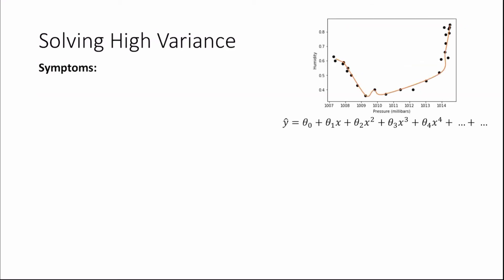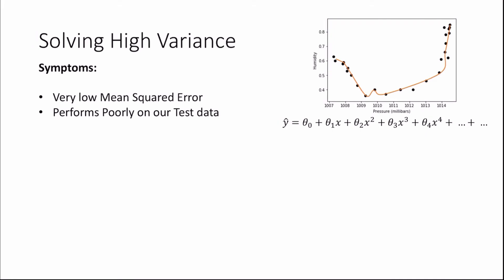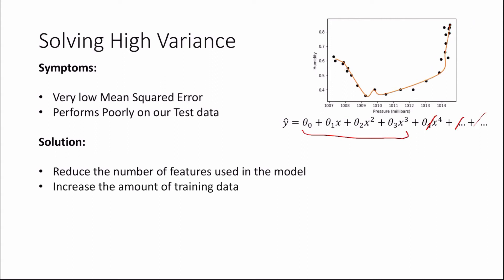For models with a high variance, symptoms include a very low mean squared error since all data points are very close to our model. However, they also perform poorly on test data — for example, our model may make quite a significant error on a test data point. Solutions for a high variance model include reducing the number of features, and increasing the amount of training data. Adding more data forces the model — if it doesn't have enough parameters — to generalize and capture the general trend.